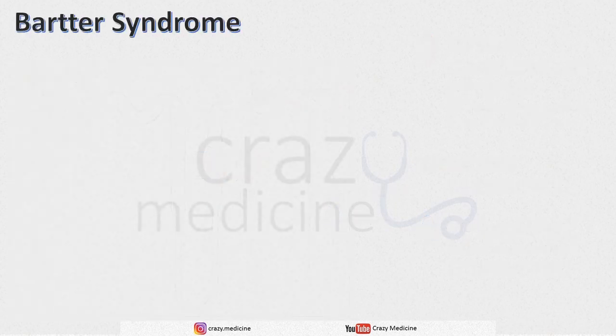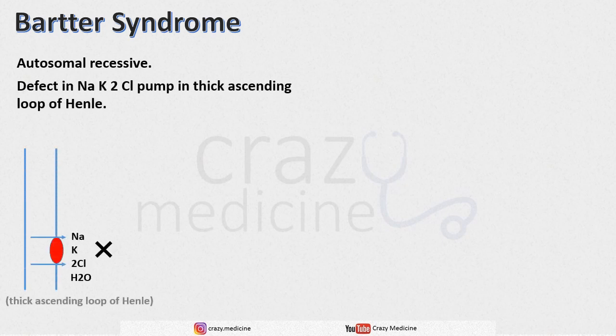The first disease is Bartter syndrome. It is an autosomal recessive disorder where there is a defect in the sodium-potassium-2-chloride pump in the thick ascending loop of Henle. Along with this channel, there is also a chloride channel which reabsorbs chloride, and a ROMK channel which reabsorbs potassium. Both these channels are also inhibited in Bartter syndrome.